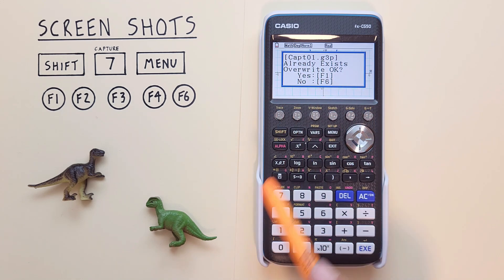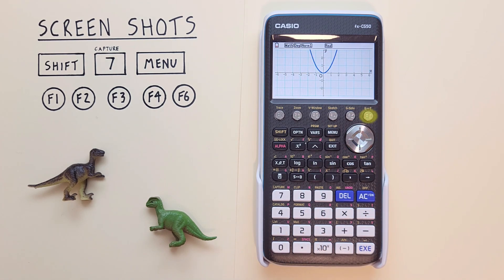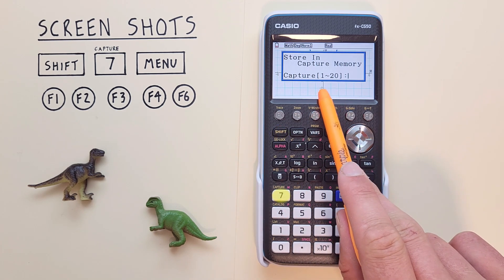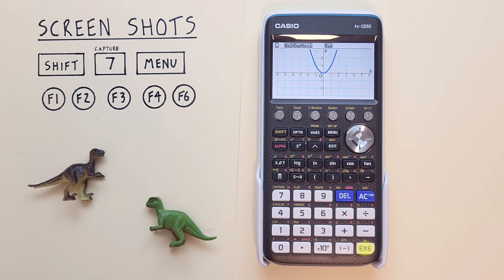We can either choose yes or no. For us, let's say no. So we hit F6 to go back and then shift seven. And we'll store that in number two. There we go. Now we have two screenshots saved.